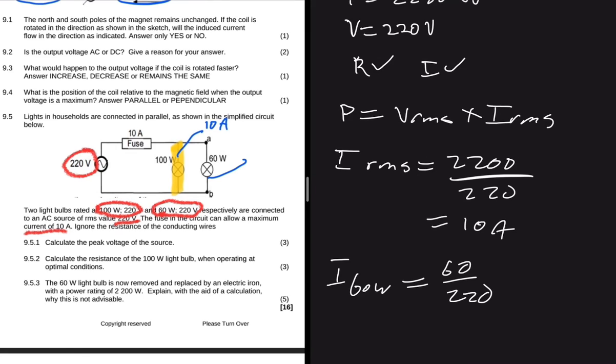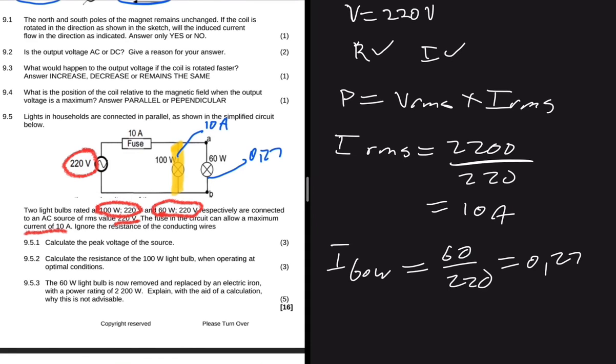So let me just put that in my calculator real quick and see what we get. Okay so we have 60 divided by 220 which is equal to 0.27 amps. So 0.27, and then the fuse can only allow a current of 10 amps, but now we are requiring a current of 10.27. So what's going to happen? The fuse is going to burn out because the current that is required is greater than that which the fuse will let pass through. So it will not be advisable at all to have this electric iron on this circuit of ours.